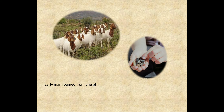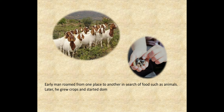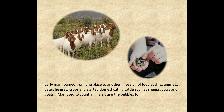In ancient times, early man roamed from one place to another in search of food, such as animals. Later, he grew crops and started domesticating cattle such as sheep, cows, and goats. Man used to count animals using pebbles to ensure that the number of cattle was equal to the number of pebbles.